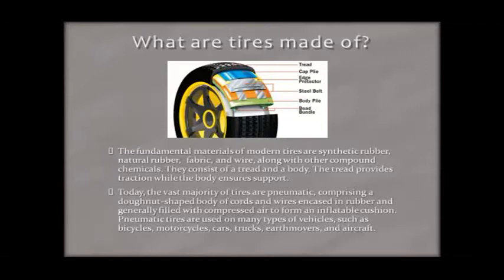Today, the vast majority of tires are pneumatic, comprising a donut-shaped body of cords and wires encased in rubber and generally filled with compressed air to form an inflatable cushion. Pneumatic tires are used on many types of vehicles, such as bicycles, motorcycles, cars, trucks, earthmovers, and aircraft.